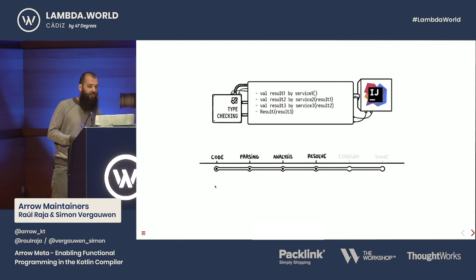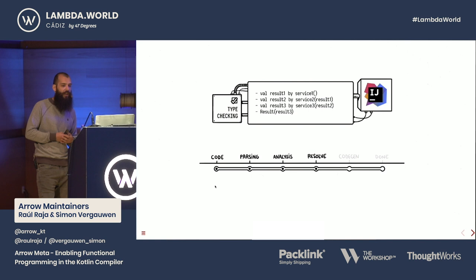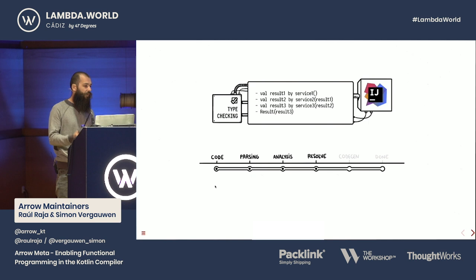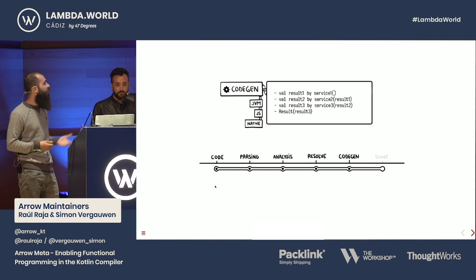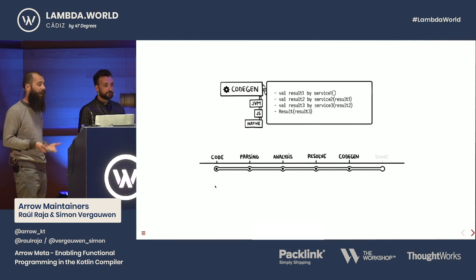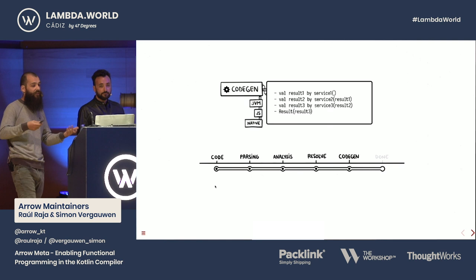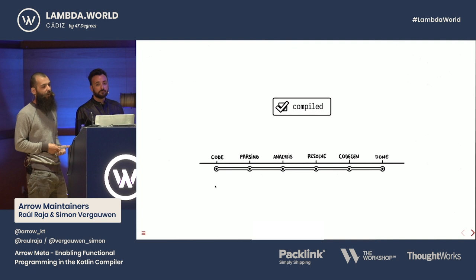For the originally parsed tree, the compiler will associate descriptors. These descriptors contain all the type information, all the semantics of the Kotlin language, which are necessary for IntelliJ to render their tooling and inspections, and for the compiler in the next phase to produce the binaries. Once this is all created, the compiler can go into the code generation phase, and it can create the binaries for the different platforms. Kotlin currently supports JVM, JavaScript, and native. Once all this is done, the binaries are created and the compiler finishes successfully.